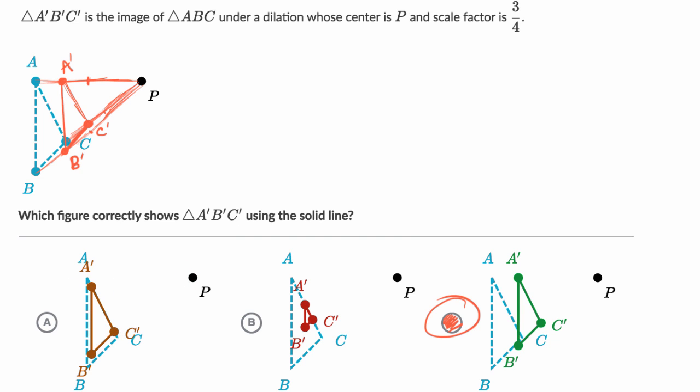But it doesn't look like the center of dilation is P. Here, the center of dilation looks like it is probably the midpoint of segment AC, because now it looks like everything is 3 fourths of the distance it was to that point.